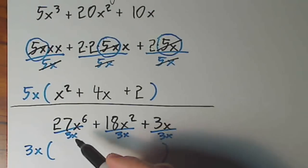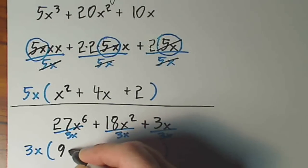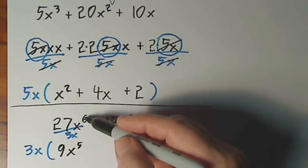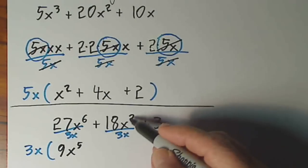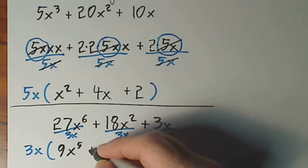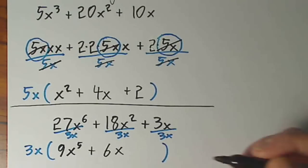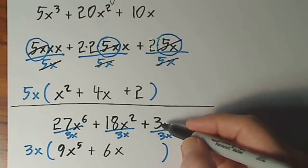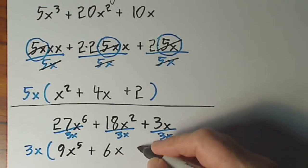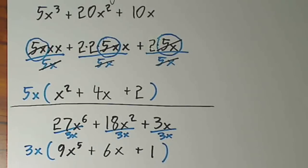So 27x to the 6th divided by 3x leaves us with 9x to the 5th. Just subtract 1 from your exponent. 18x squared divided by 3x is plus 6x. Just subtract 1 from your exponent. And 3x divided by 3x is 1.